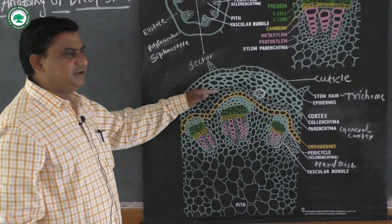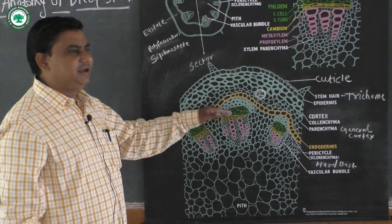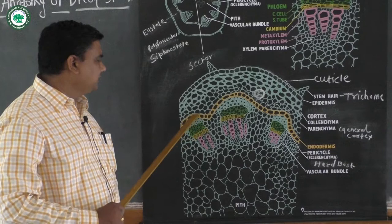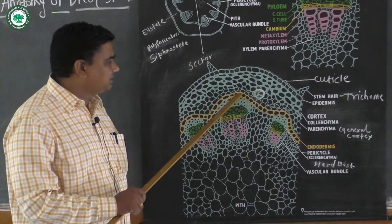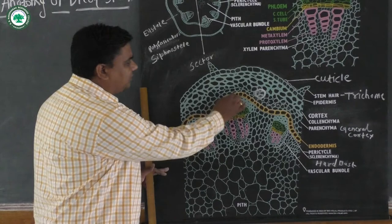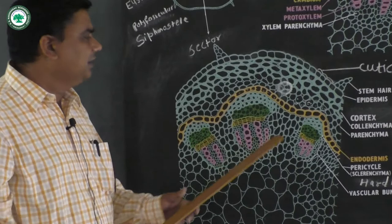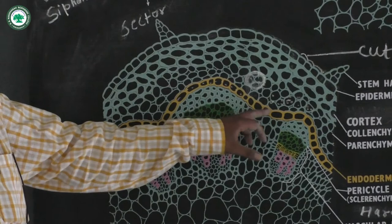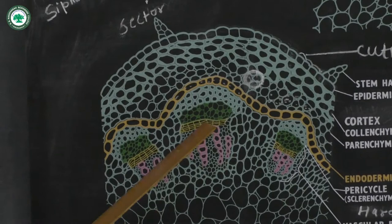Between the particular cortical region and the stele region, there is a particular single layer of endodermis. The cells of the endodermis are barrel-shaped and compactly arranged. When there is the presence of starch in the endodermal cells, it forms the starch sheath.